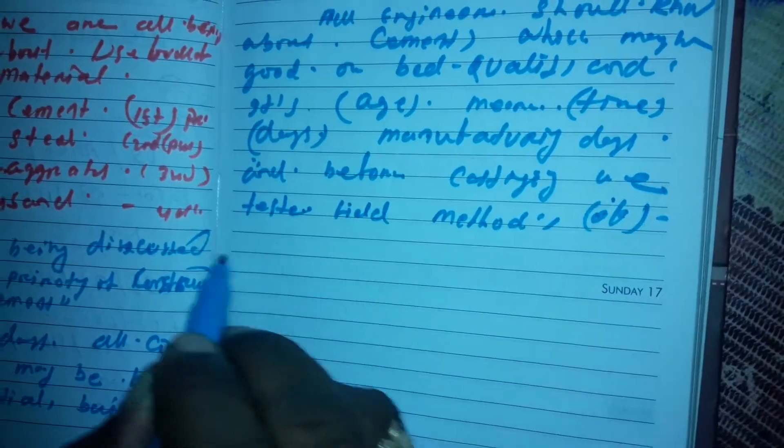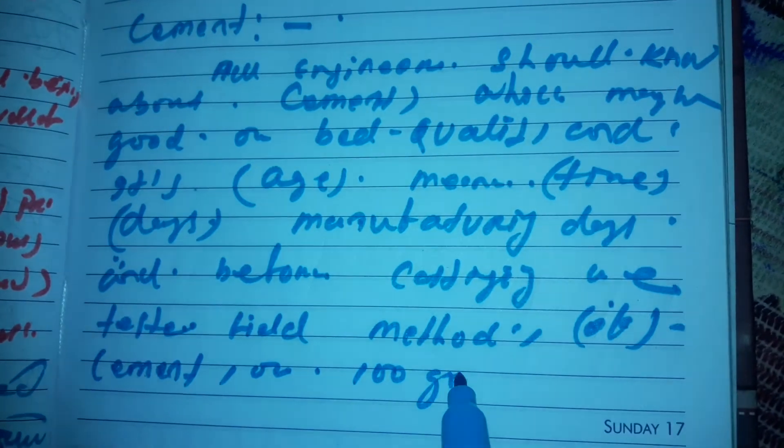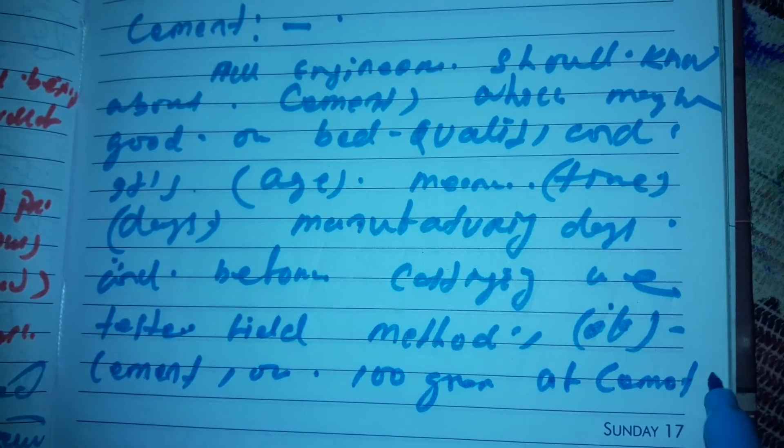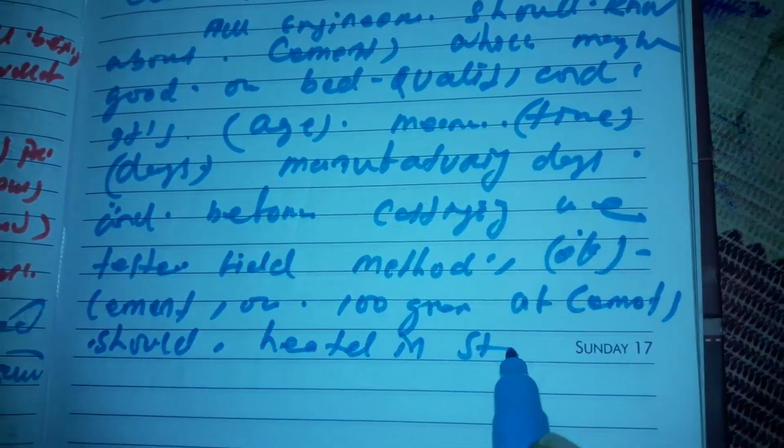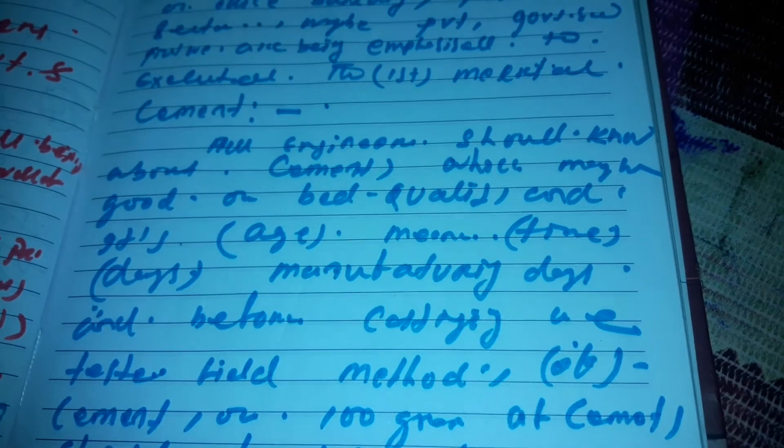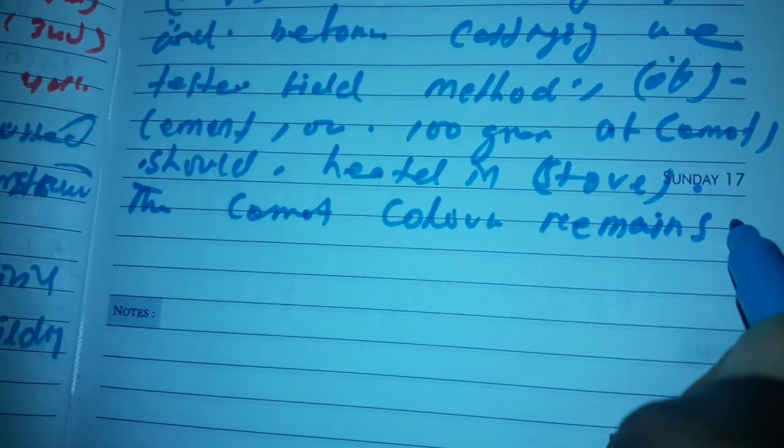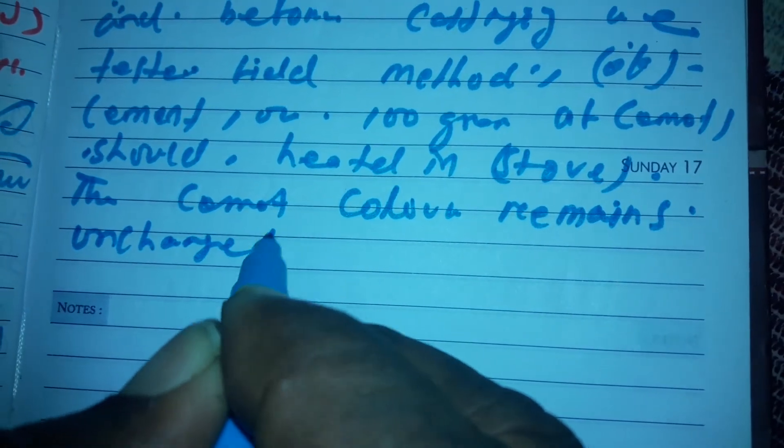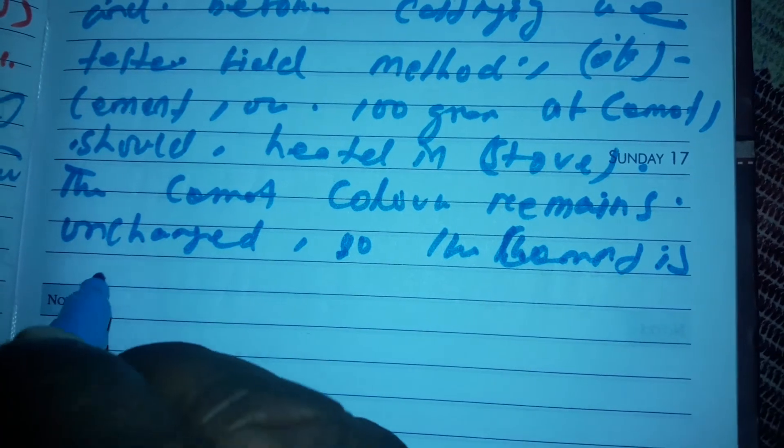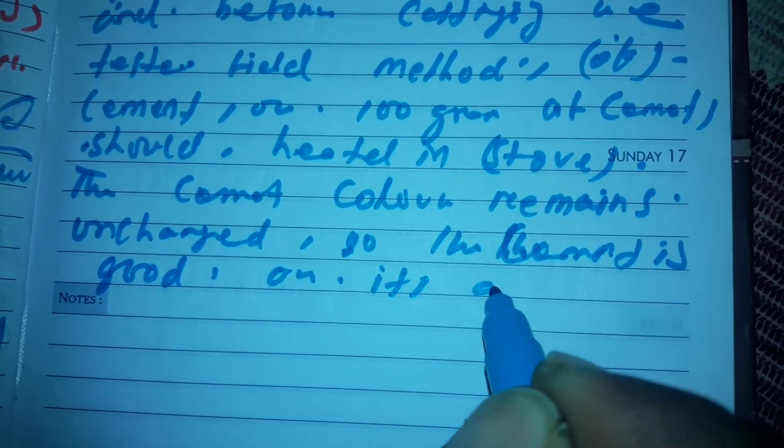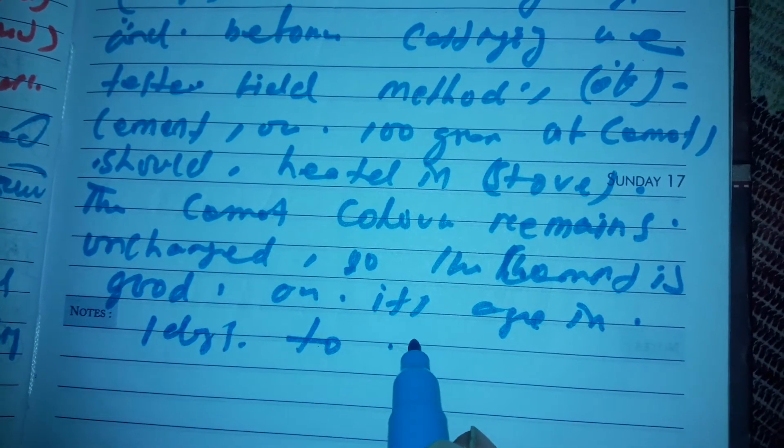If 100 grams of cement is heated in a stove and the cement color remains unchanged, then the cement is good. It says age one day to seven days.